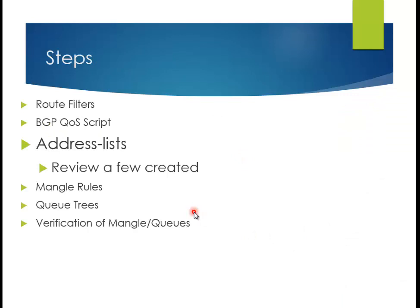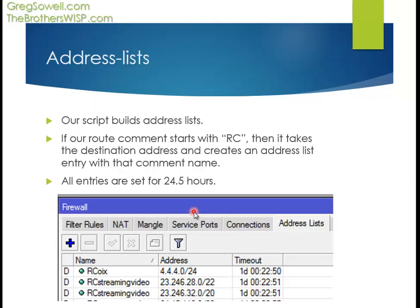Reviewing the address list: we have entries for the Open Exchange and streaming video. Theoretically, if you wanted to add additional subnets without using route filters, you would just add the address list entry named RC Streaming Video or RC OIX, and it would get picked up in later configurations. You don't necessarily have to add a static route with a route comment - you could just come in and statically add the address list entry directly. It seems a little easier to just add the address list entry.